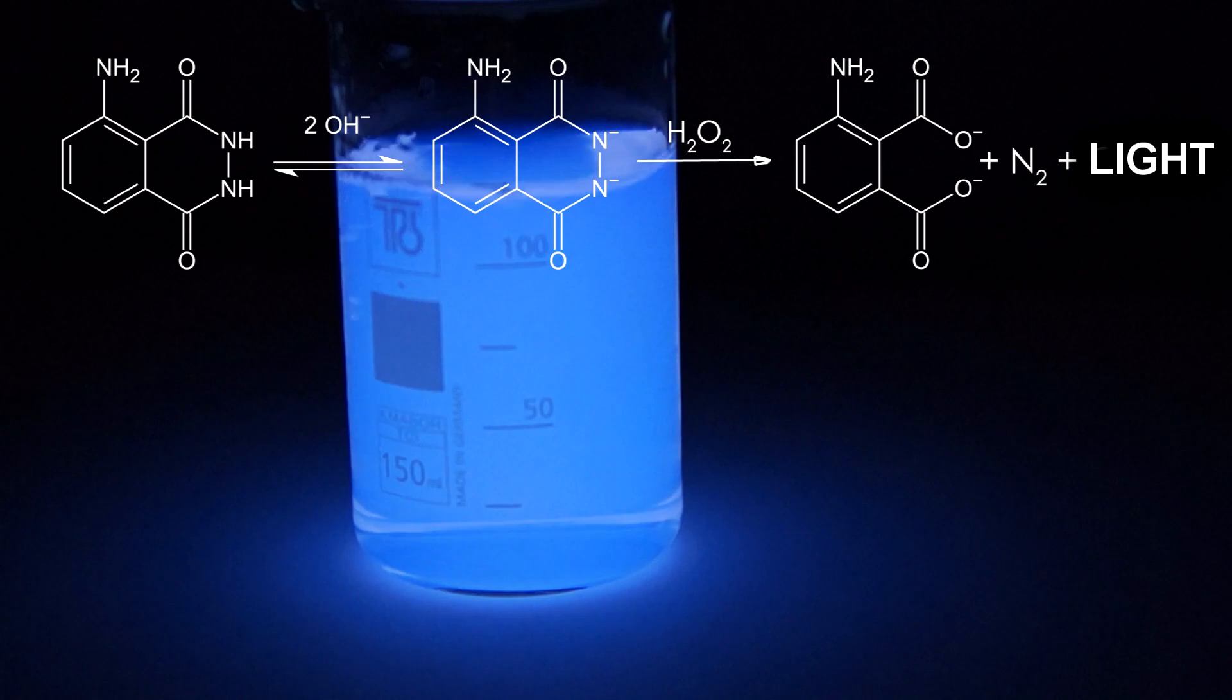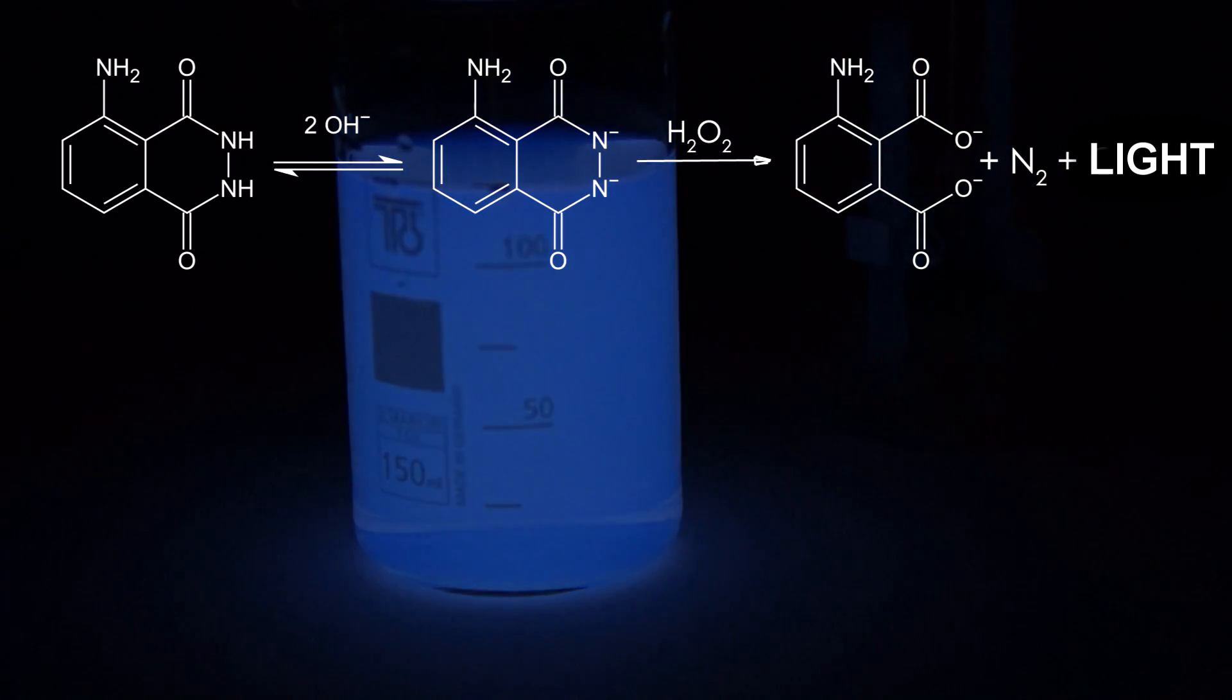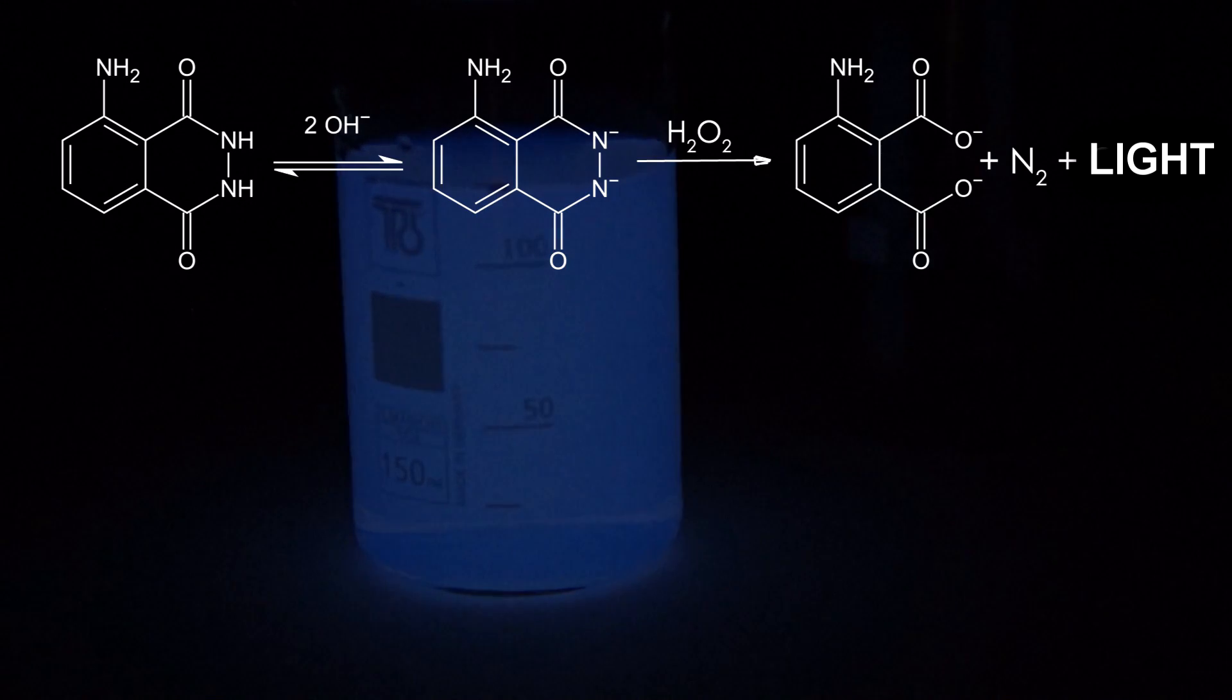Light emission occurs because luminal is oxidized by hydrogen peroxide, and the resulting new substance creates a photon, which is a particle of light.